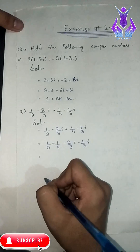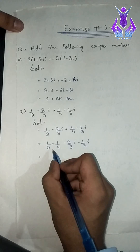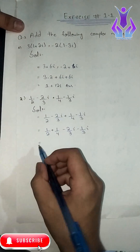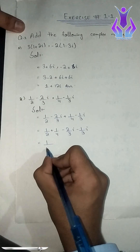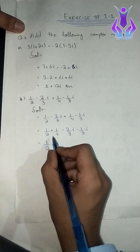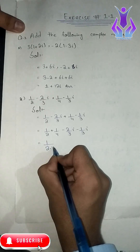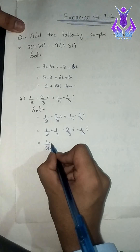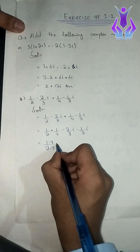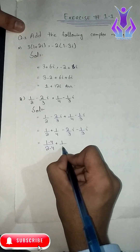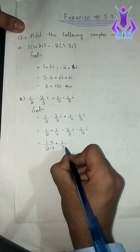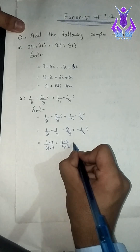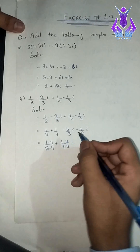Now we will find the LCM. LCM is easy when our denominator is the same. First, we will make the denominator the same. For 1 divided by 2, we multiply by 4 over 4. For 1 divided by 4, we multiply by 2 over 2. Then we apply the same process to the iota terms.